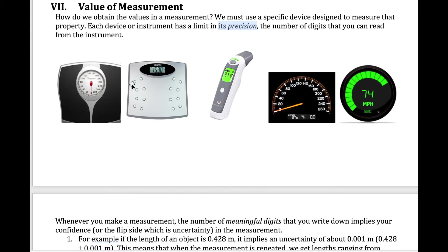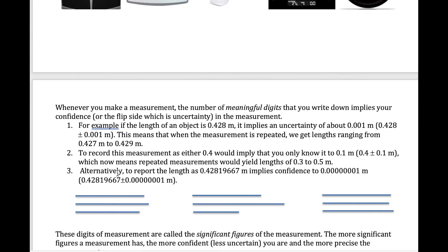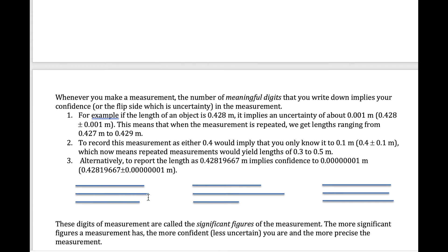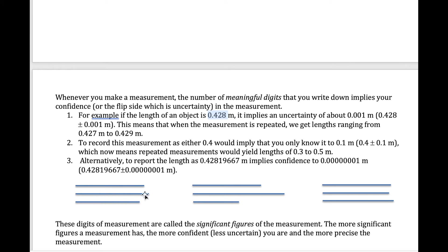Some scales give you four digits, others only three. The number of meaningful digits you write tells other people how confident you are in your measurement. For example, a measurement of 0.428 meters means that if you measure it many times, the result varies between about 0.427 and 0.429 — a plus or minus of one in the last digit. This is the standard interpretation of a measurement's uncertainty.